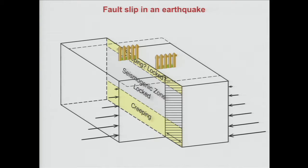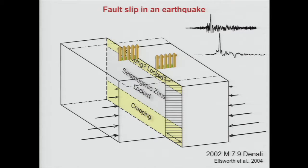The process itself is not instantaneous, but it is very rapid. This rapid process generates seismic waves, which we can measure in seismograms. This is actually an acceleration measured close to the fault in the Denali magnitude 7.9 earthquake — an integrated record producing velocity of how fast the Earth was moving. The duration is really in seconds, so it's a very rapid process.